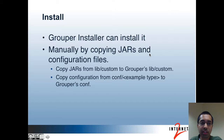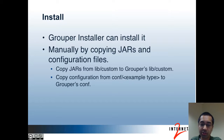Next I'll talk about the install. The Grouper installer can install this, or you can manually install it by copying jars and config files. You would copy the jars from the lib custom directory of the PSP to the lib custom directory of Grouper. You would copy the example configuration from a particular directory within the conf directory of the PSP to the conf directory of Grouper. The particular directory depends on the example you want to start off with, which I'll cover in the next slide.